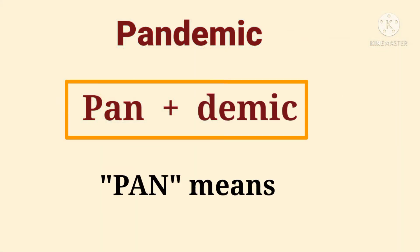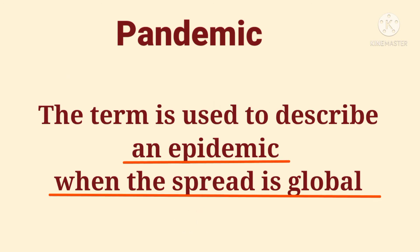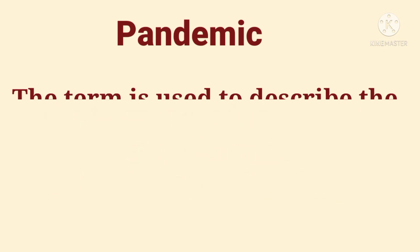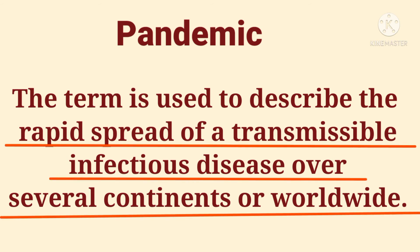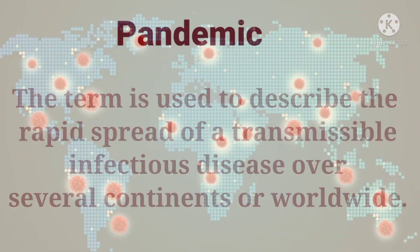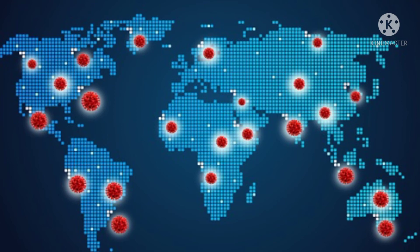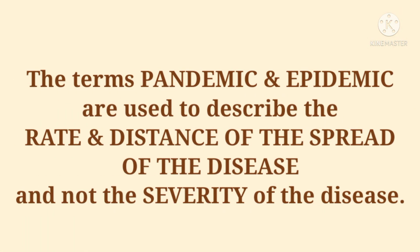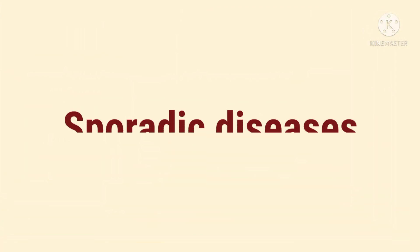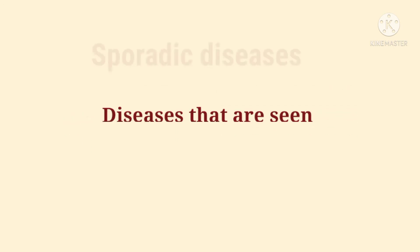The Greek prefix 'pan' means 'all.' Pandemic is the term used to describe an epidemic when the spread is global. The term describes the rapid spread of a transmissible infectious disease over several continents or worldwide. As we all know, the latest example of a pandemic is COVID-19. One important point to note is that the terms pandemic and epidemic are used to describe the rate and distance of the spread of the disease, and not the severity of the disease.